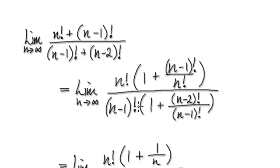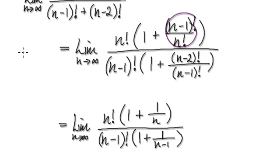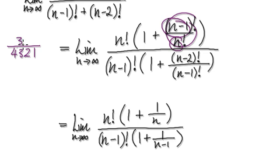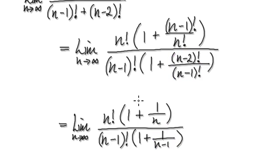Now tidy it up. Looking at this part here, you've got n on top and n minus 1 below — that's 1 less. So it's like having 4 times 3 times 2 times 1 at the bottom and 3 times 2 times 1 at the top — these cancel, giving you 1 over 4. In general, simplifying this gives you 1 over n. And similarly, simplifying the other part gives you that expression.